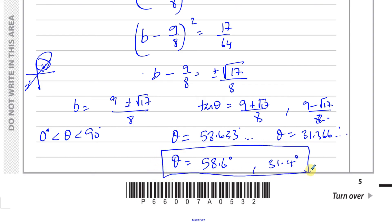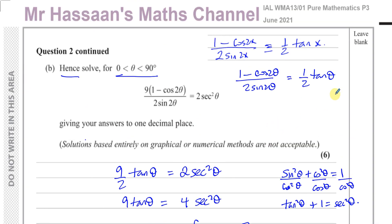Other questions from this paper — P3 June 2021 — can be found by clicking on the link. Other trig identities and equations questions from P3 by clicking another link. Subscribe to the channel, and in the description you'll find links to my other papers — P1, P2, P4, S1, M1 — and Cambridge IGCSE questions. Thanks for watching and see you soon.